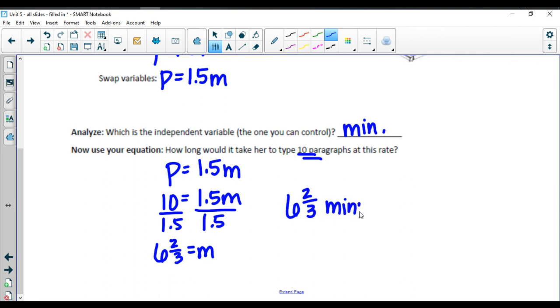So we have six and two thirds. M represents time. So this would be minutes. If we really wanted to, two thirds of a minute is actually 40 seconds. So we could say it would take her six minutes and 40 seconds to be able to type this out.